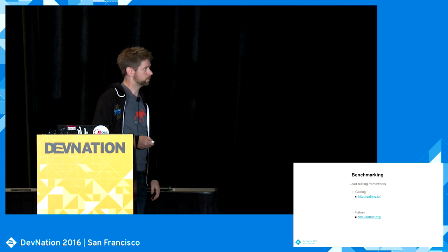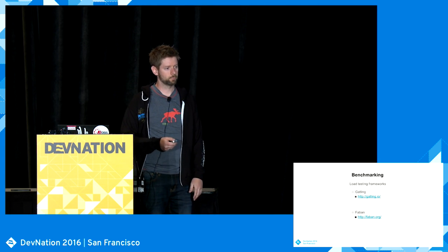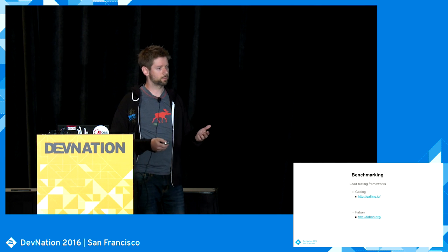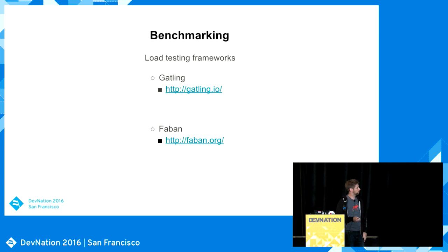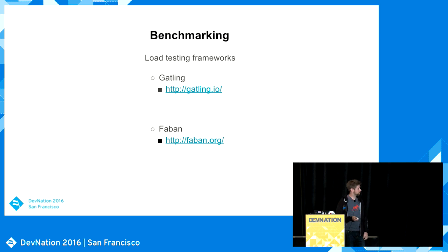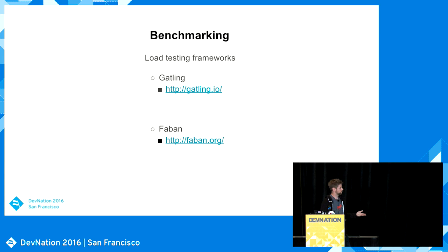For load testing frameworks, there are two tools we use: Gatling and Faban — both open source. Gatling is a Scala project using Netty and Akka, so it's very performant as a load driver. The problem is it only supports a single driver node (there is a paid professional version for multiple drivers). Faban is a Java tool, older, created by Sun and adopted by Oracle, used by the SPEC organization for their benchmarks. We use it when we need to drive load from multiple driver nodes. It requires more resources than Gatling but is a really good tool.